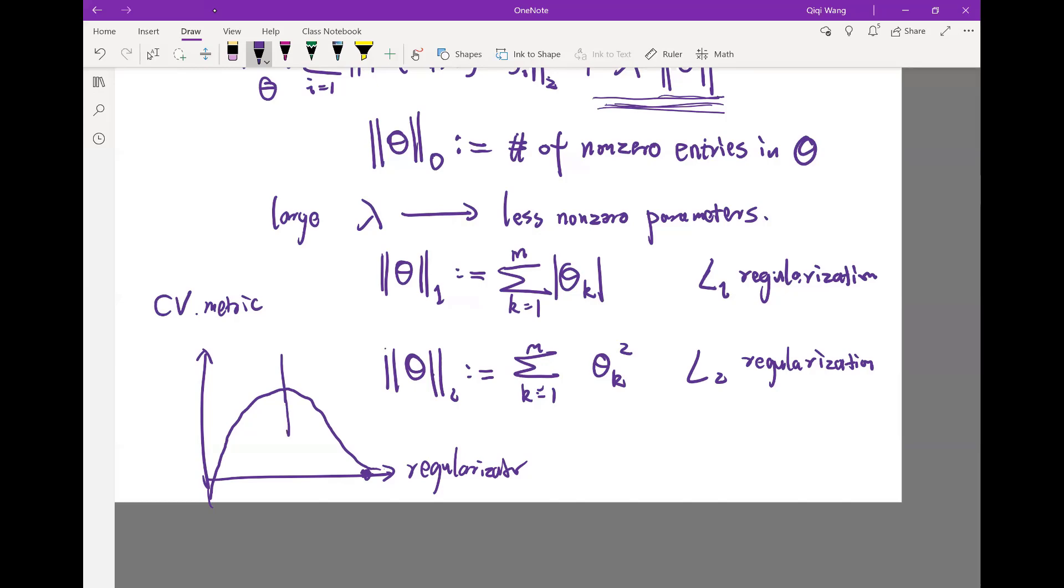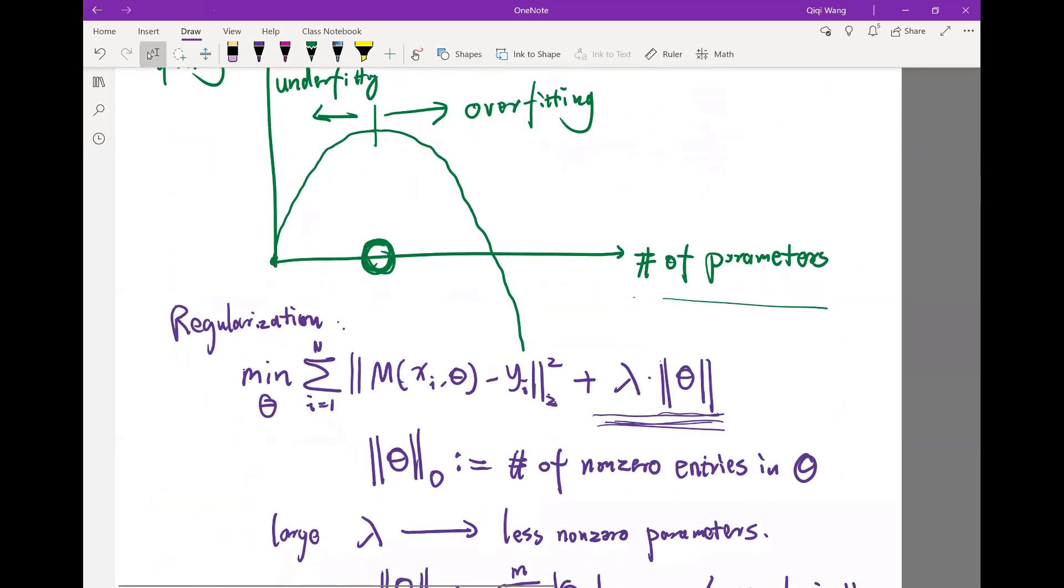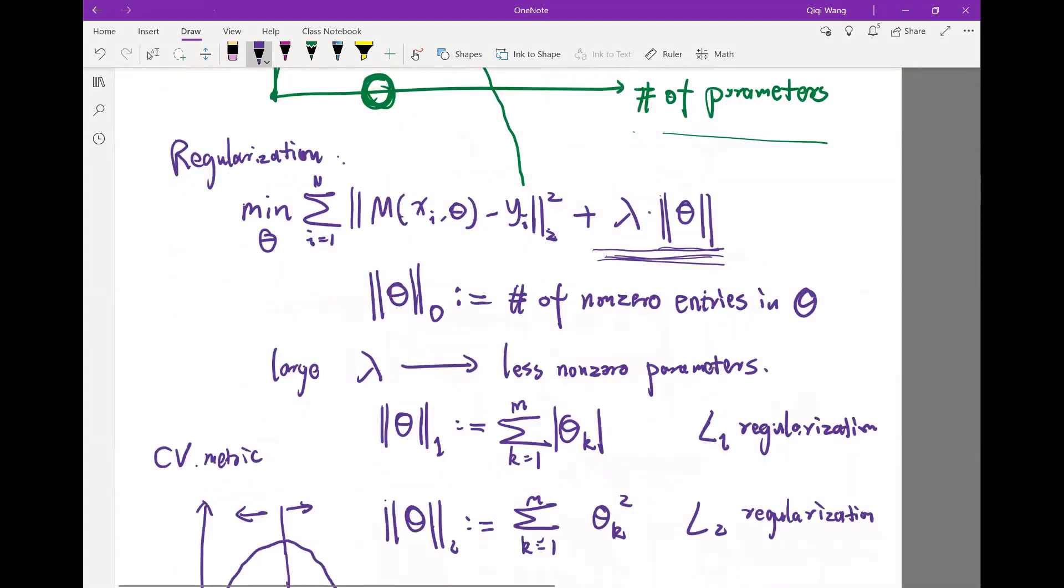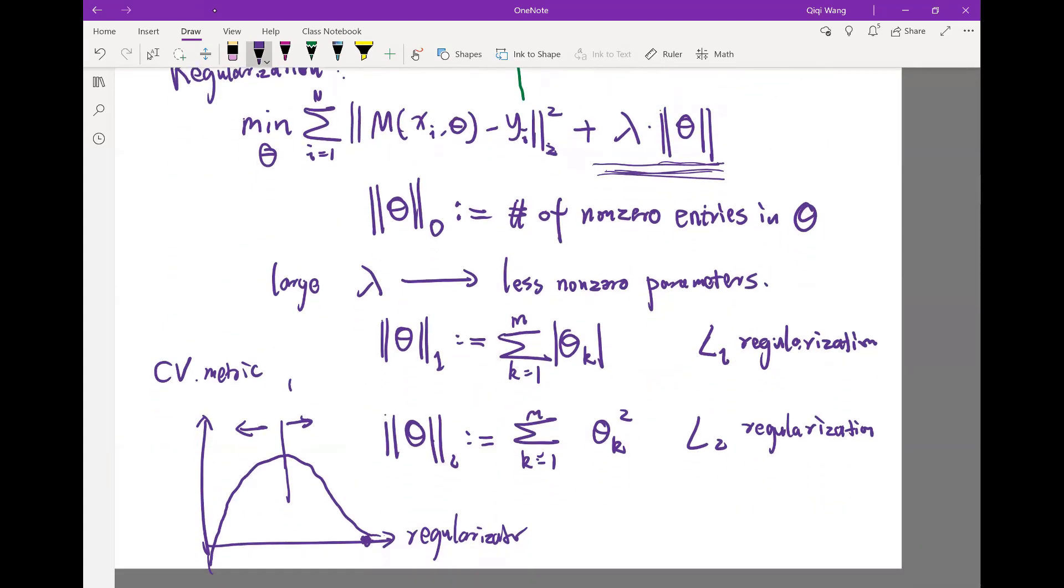So again, you have two cases of over-fit and under-fit, but the direction is opposite. Instead of having over-fit on the right, you have under-fit on the right. You have too much regularization. And on the left, you have over-fit because you have too little regularization.